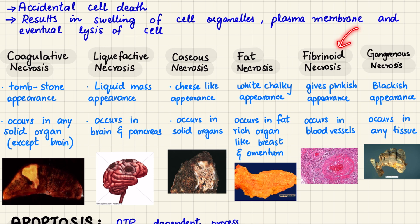Fibrinoid necrosis occurs in blood vessels and is associated with immune reactions such as those in autoimmune diseases. Under the microscope, the affected vessels show a pink fibrin-like appearance because of the deposition of immune complexes and fibrin, as seen in this image.